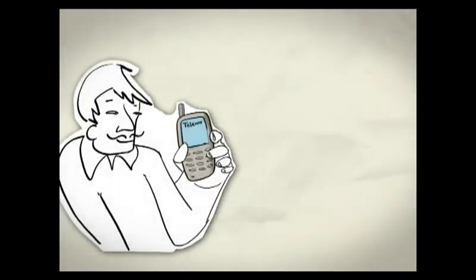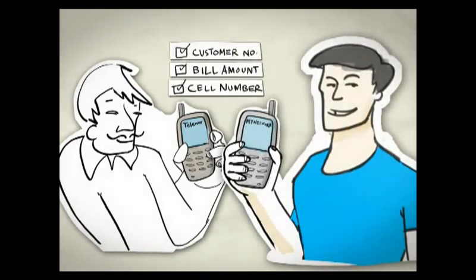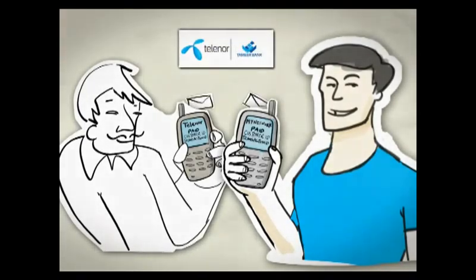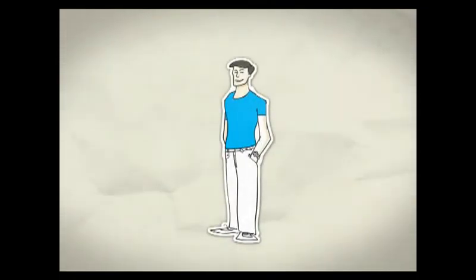The shopkeeper, using his Telenor connection, feeds the customer number from the utility bill along with the bill amount and Danish's cell number, and processes the transaction. A confirmation message is received on both the shopkeeper's and Danish's cell phone. The shopkeeper puts the authorized stamp on Danish's utility bill.